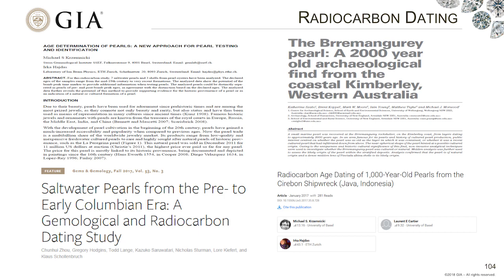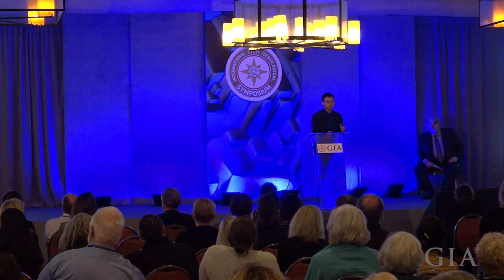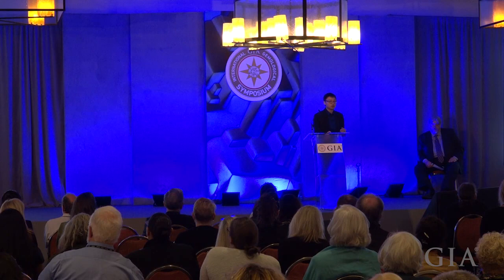Now let's take a look at its potential limitations. First of all, the technique is a little bit destructive — probably about 10 milligrams is needed for testing, which is about 0.05 carat. Secondly, there is an unknown local marine reservoir effect for unknown samples. If you don't know where the pearl was formed, it is quite difficult to get an accurate age. The data usually give you a relatively wide age range — maybe 200 years — so it's also difficult to get an accurate age determination.